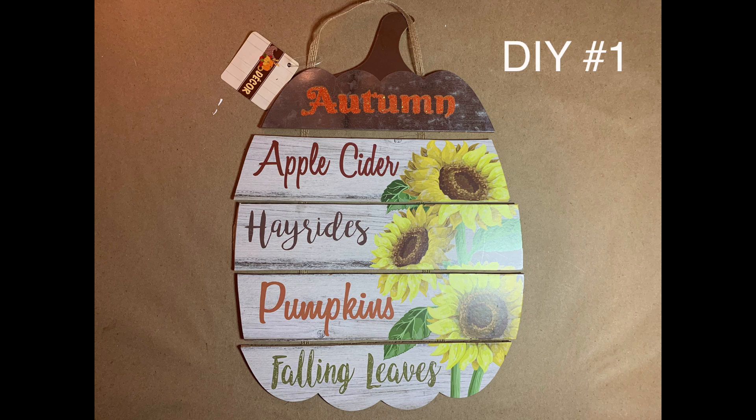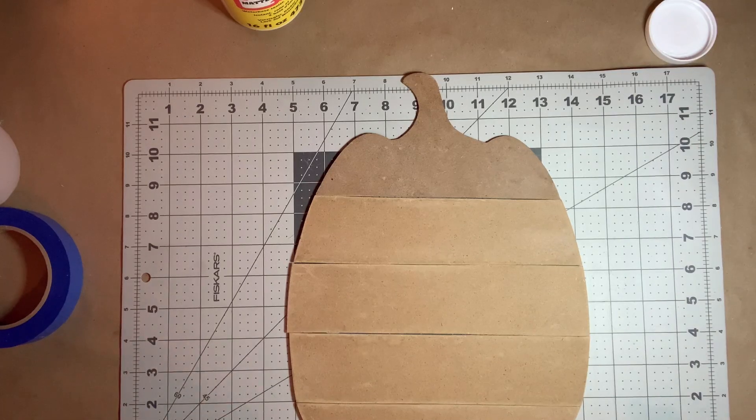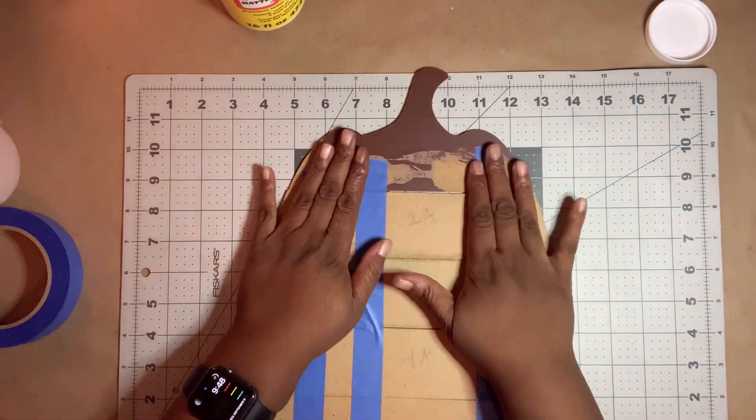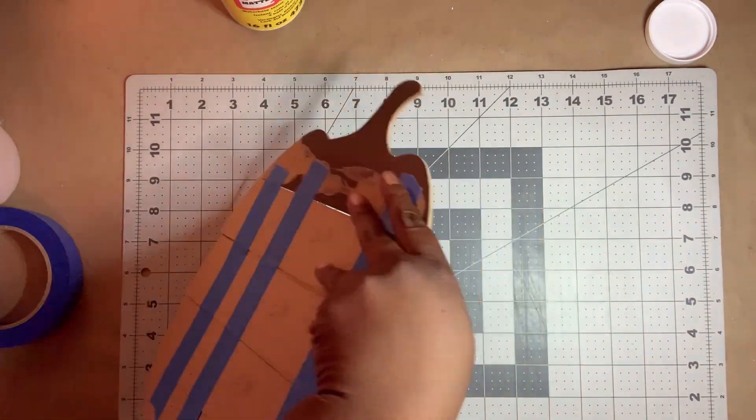I began by taking apart and removing the paper from the sign. Next, I labeled the pieces and taped them together on the back.